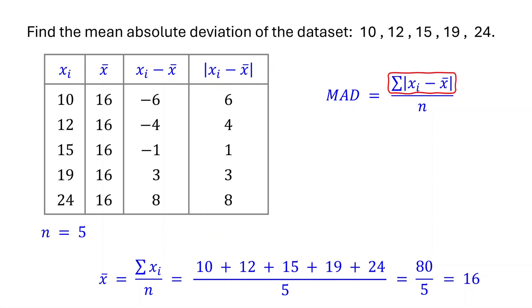Now, to get this sum in the numerator, you just need to add up all the absolute deviations. Adding these values, we get 22. Since n equals 5, we divide by 5. 22 divided by 5 equals 4.4. Therefore, the mean absolute deviation is 4.4.